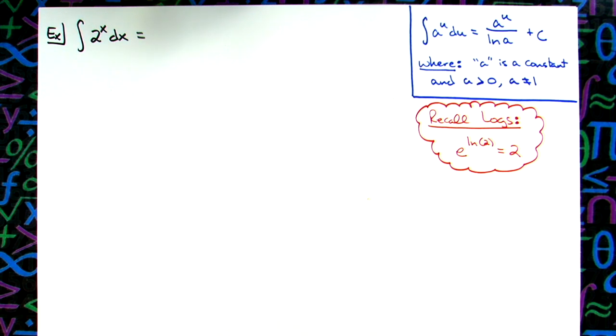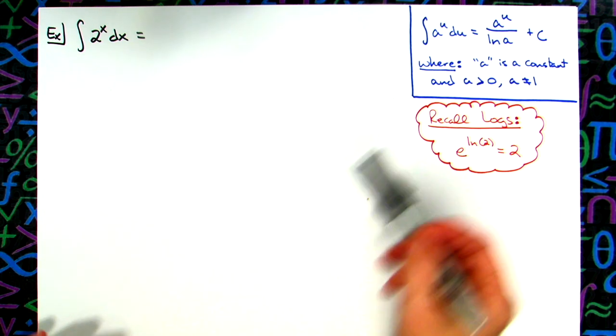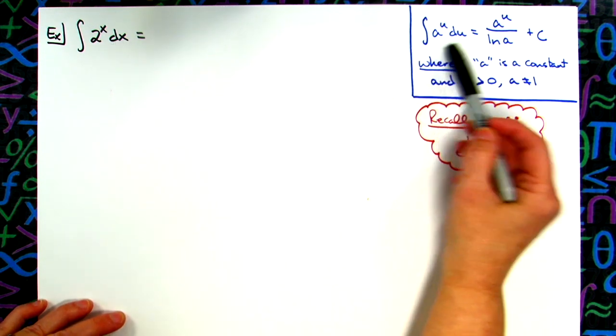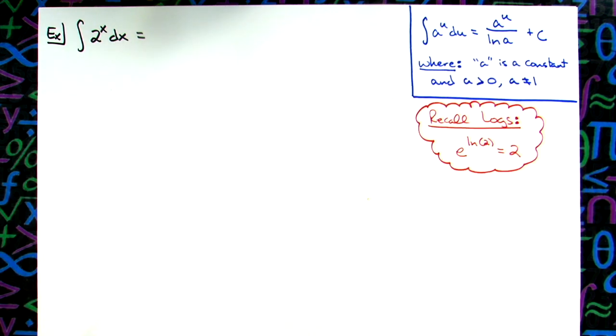However, if you have to justify this, there is a way to do it. You're going to go back, you're going to use some of your logs, some of the rules and things from that. You're going to manipulate this a lot so that you can actually do a u substitution and generate this answer that we get from this formula.